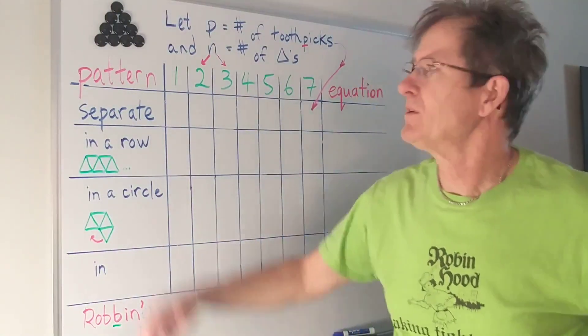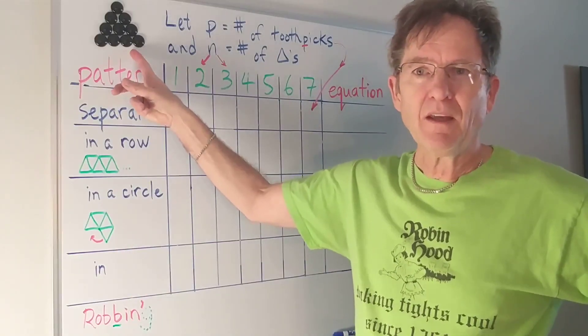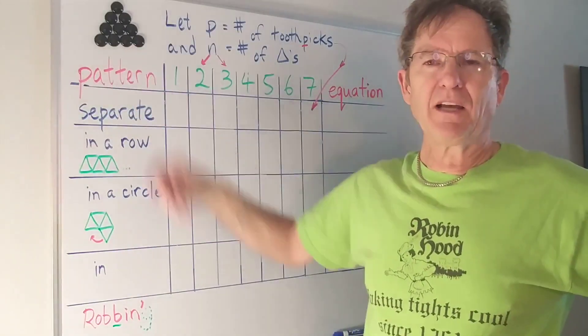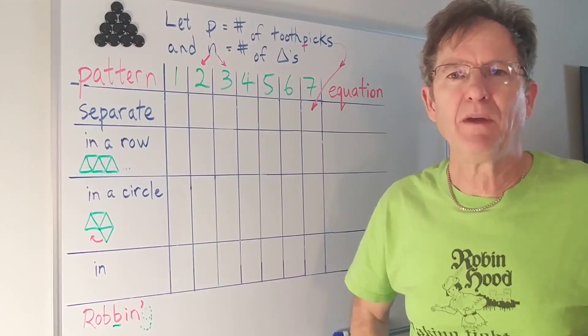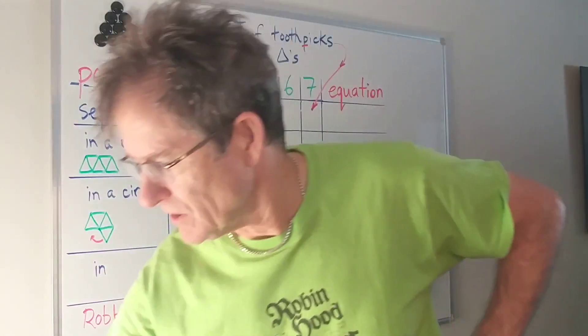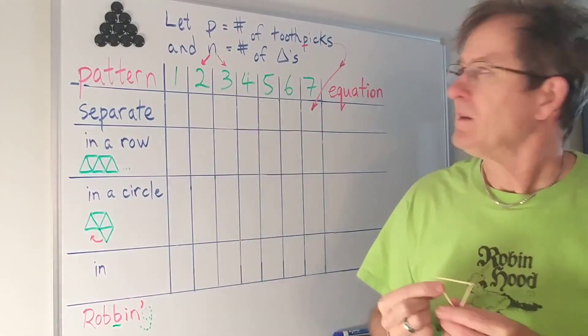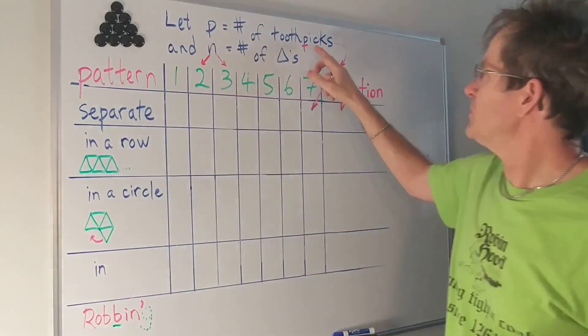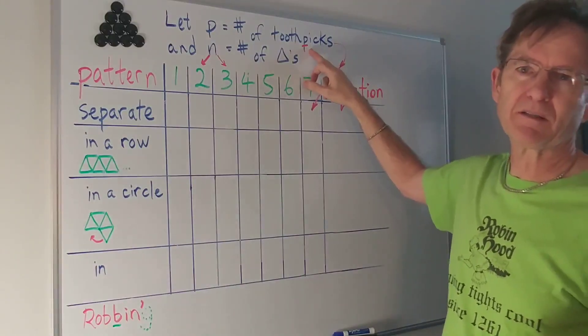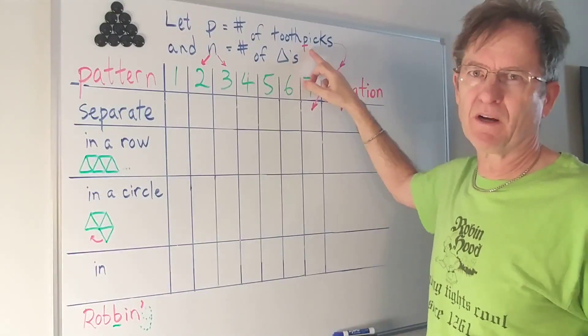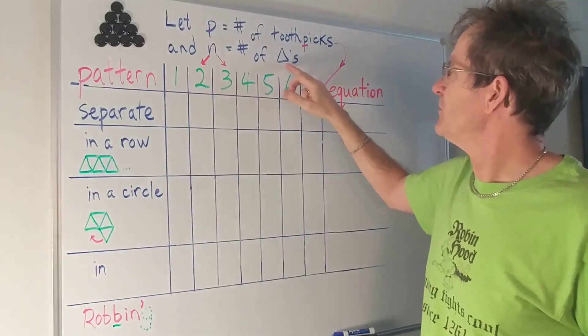Well today we're going to be talking about triangles and I'm going to be looking at some patterns depending on how you make the triangles. So imagine a triangle made out of toothpicks. Let P be the number of toothpicks. P for picks because T could also be for triangles and I'll use N for the number of triangles.